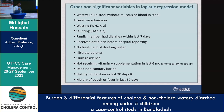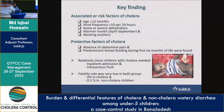The key findings: associated risk factors for cholera were age more than 12 months among under-five children, stool frequency more than 10 per 24 hours, some or severe dehydration, warmer months, and working mothers. Protecting factors were absence of abdominal pain and predominant breastfeeding. Additionally, relatively more children with cholera needed inpatient admission and intravenous fluid. Fatality rate among cholera children in the surveillance data was zero; no children died, while 1% mortality was observed among non-cholera children.